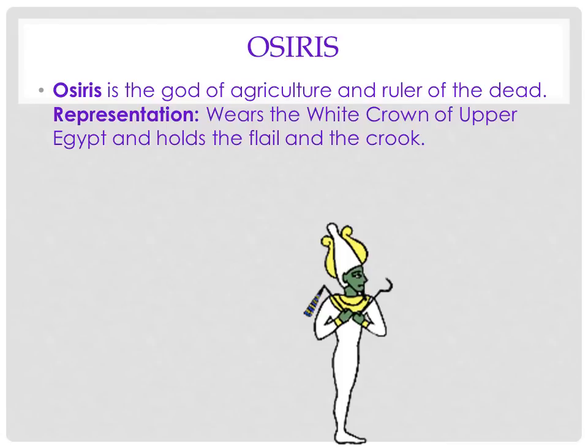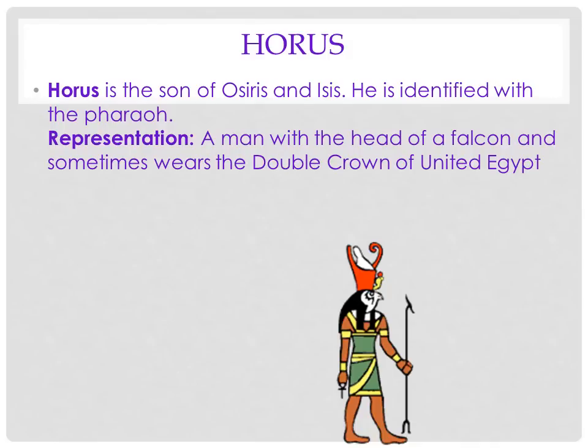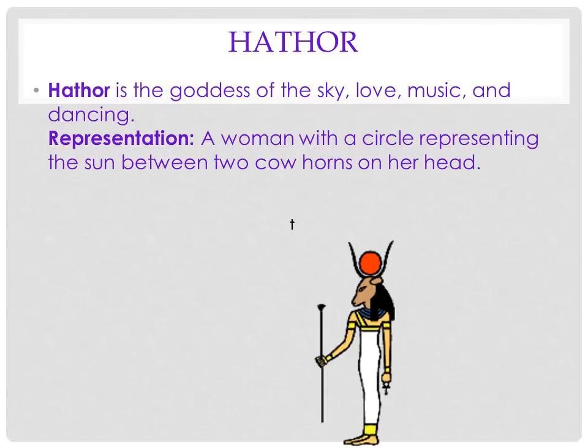Osiris, who wears the white crown of Upper Egypt. Isis, protector of children. Horus, the falcon god — you can see he has the double crown of Upper and Lower Egypt. Anubis, the god of embalming. And Hathor, the cow goddess.